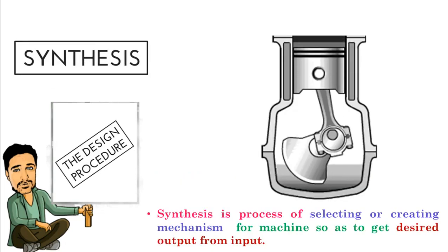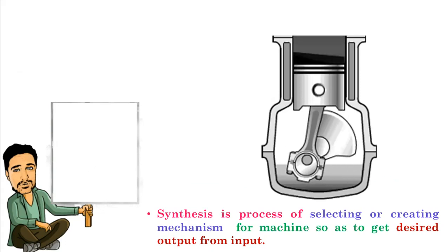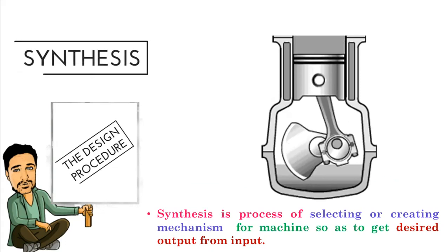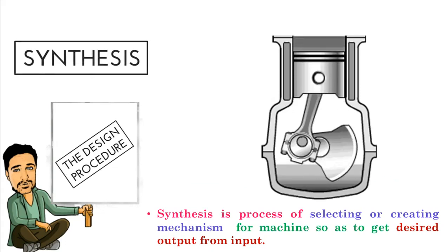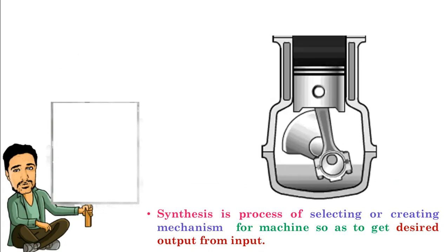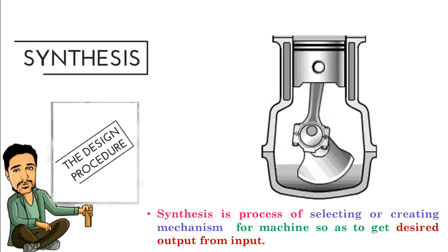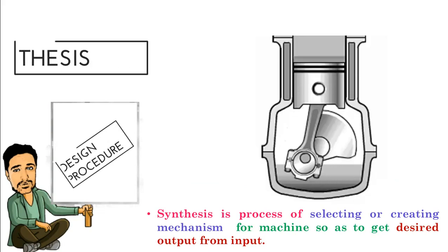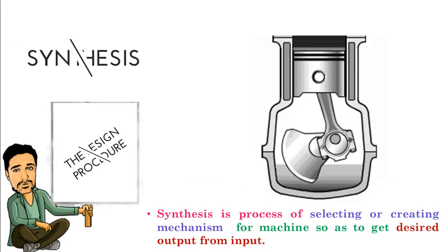Step 2: Synthesis. Synthesis is the process of selecting or creating mechanisms for machines so as to get desired output from input. For example, if you are designing a scooter, you'll have to select a mechanism which is a single slider crank chain mechanism. You can see in the animation.